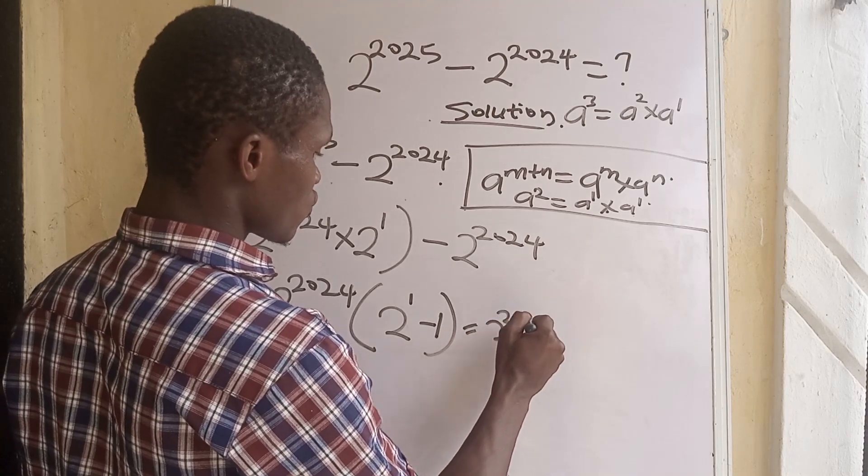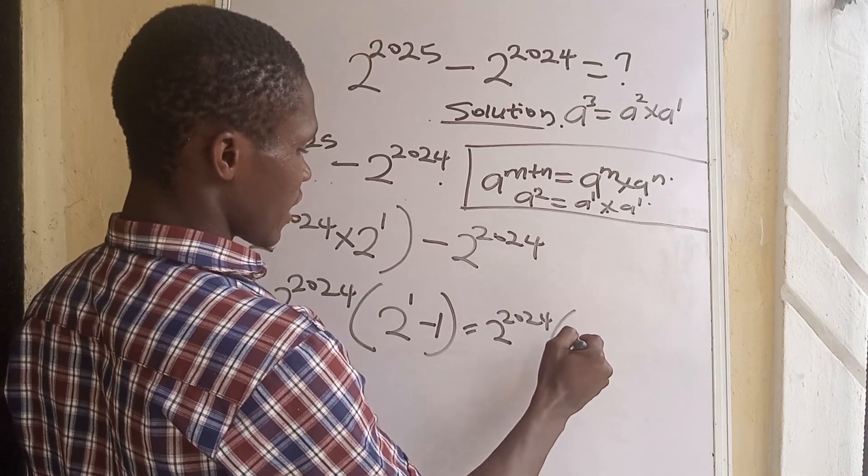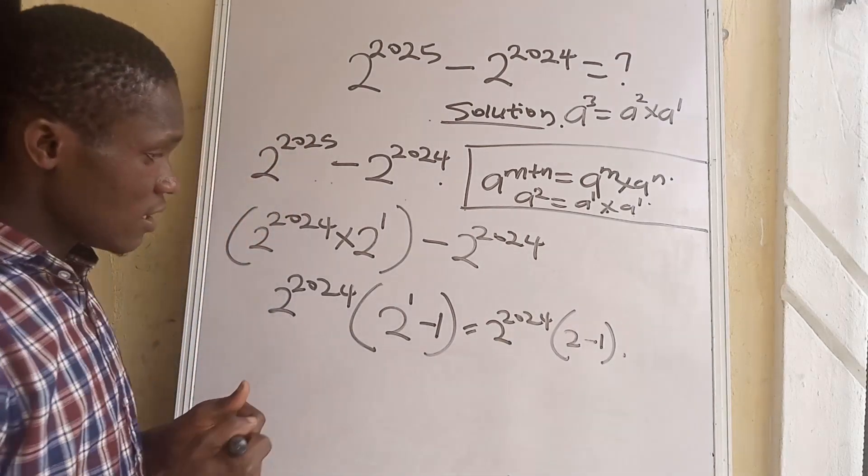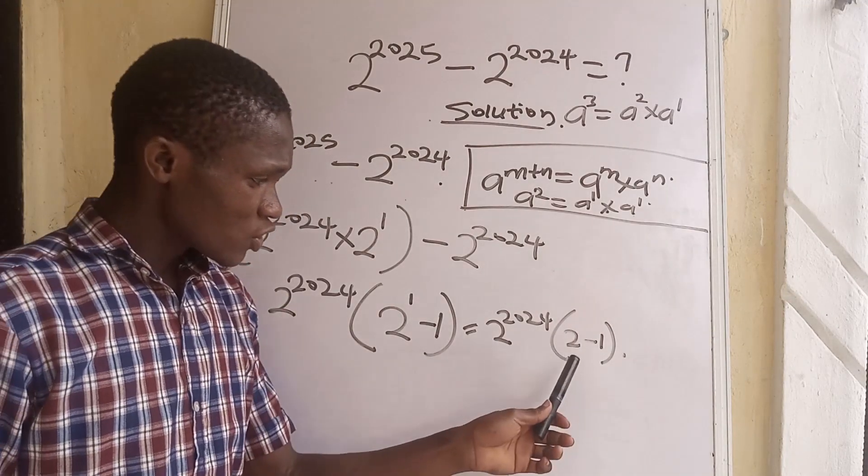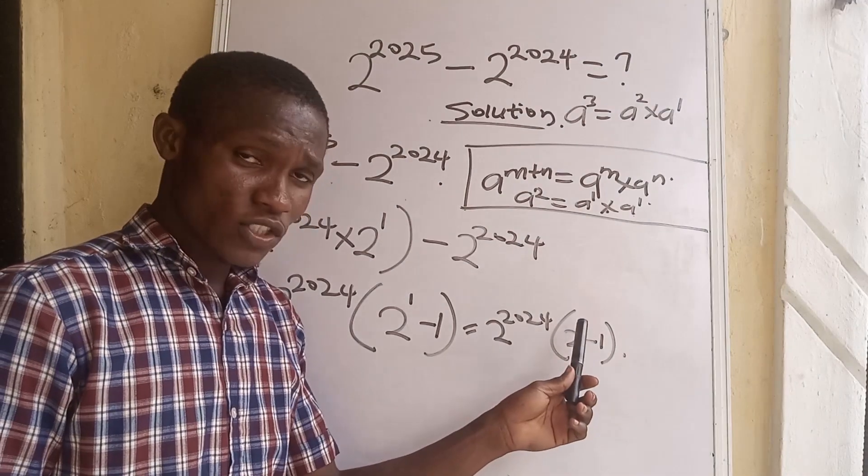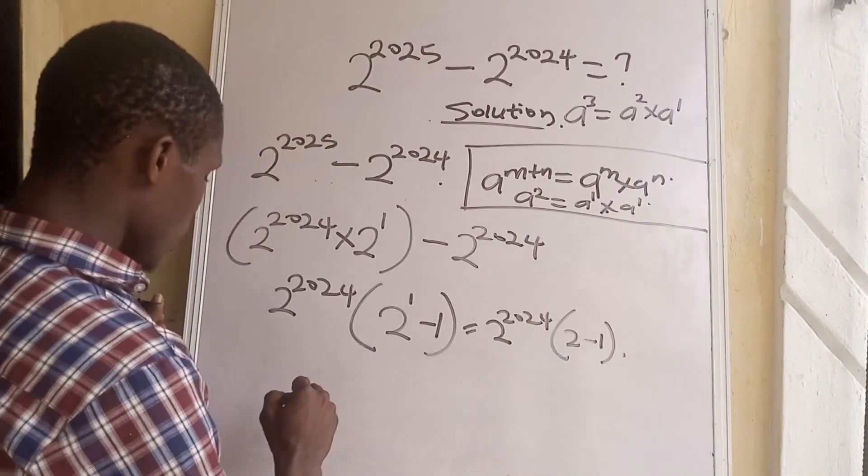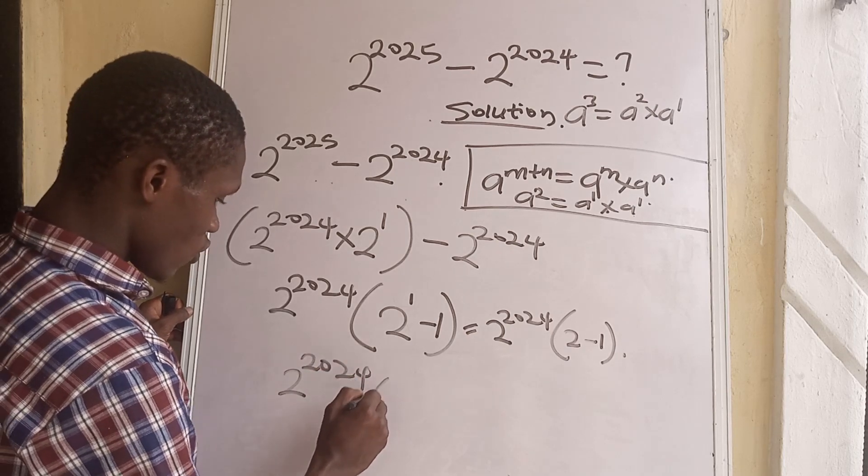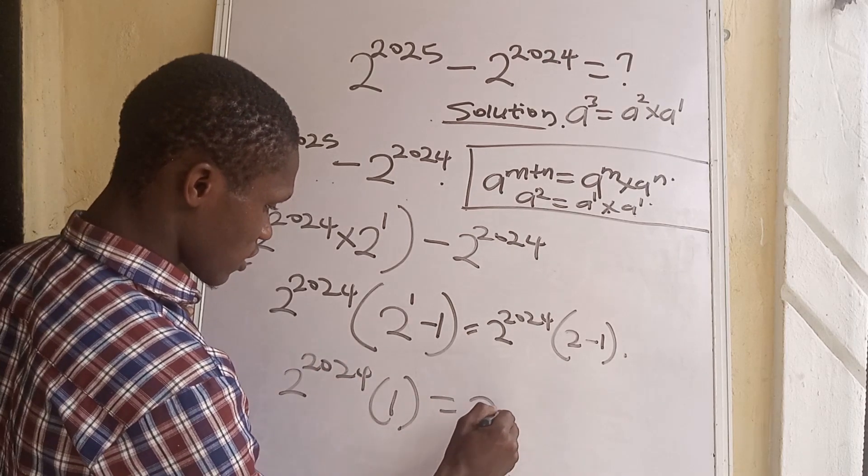This is also equals to 2 to the power of 2024 open bracket, 2 to the power of 1 is 2 minus 1. Two minus one is going to give us 1, so we are going to have 2 to the power of 2024 times 1, which is also equals to 2 to the power of 2024.